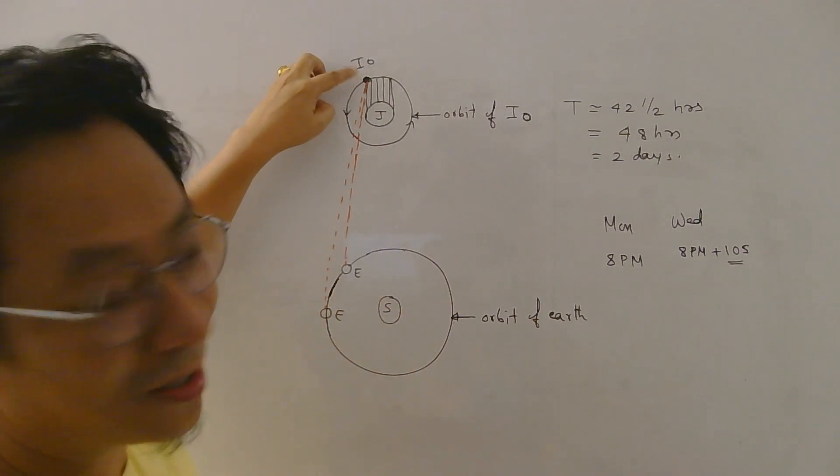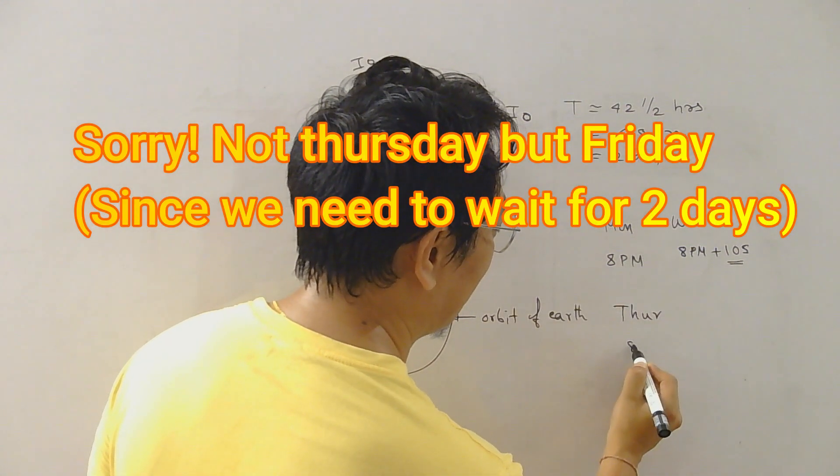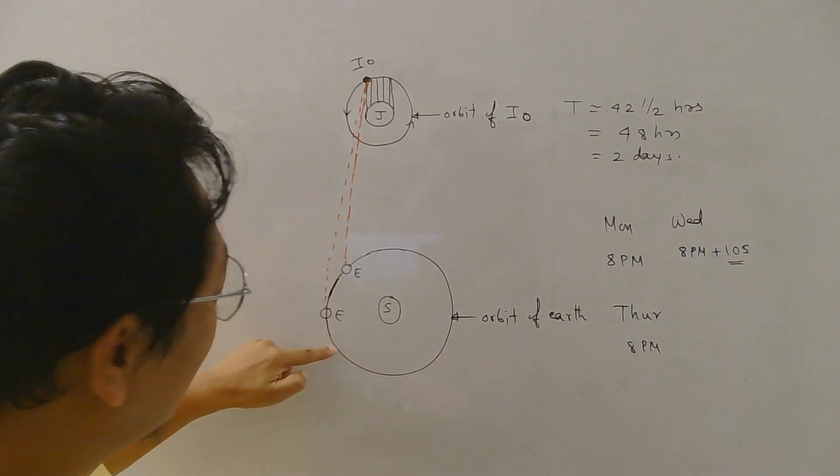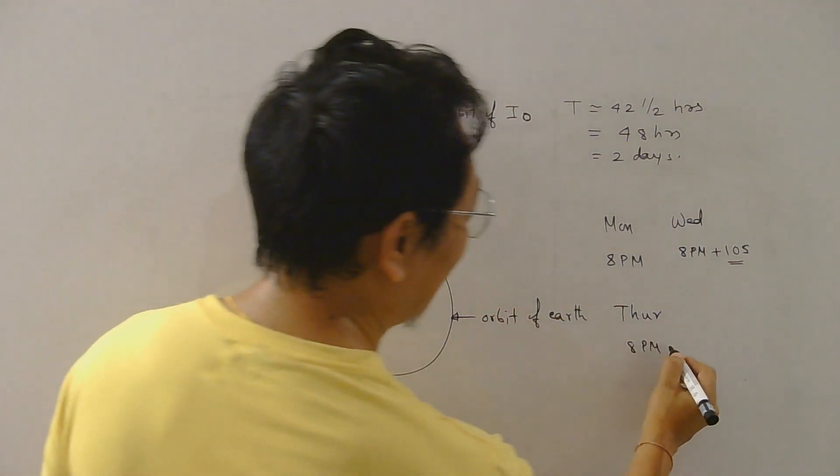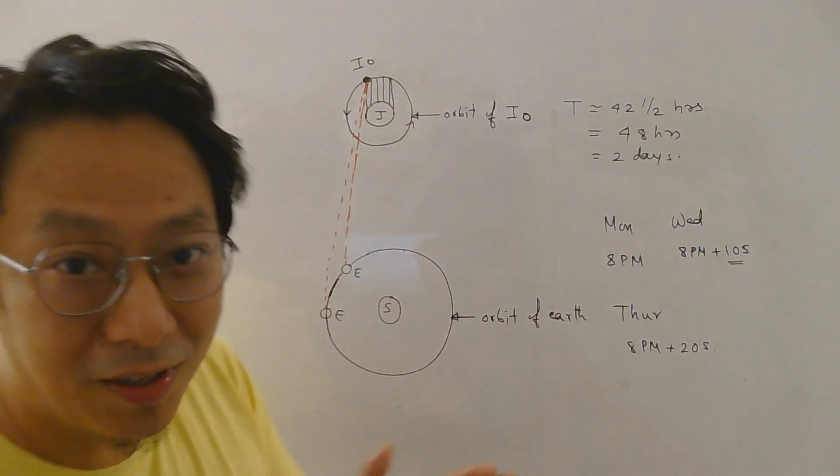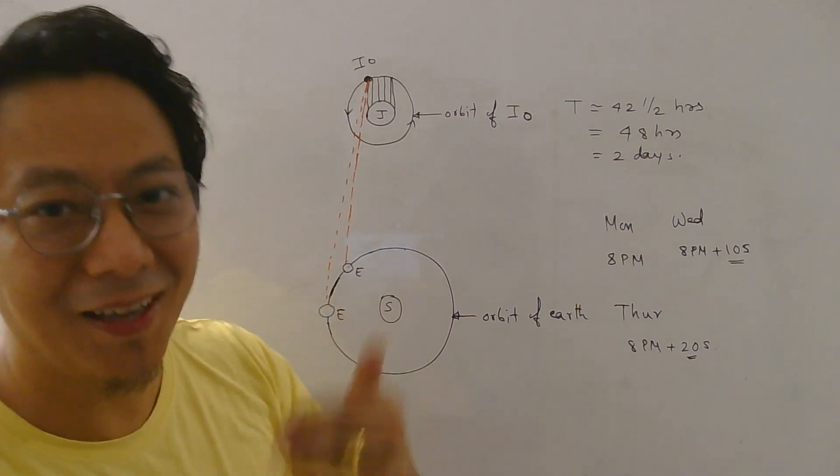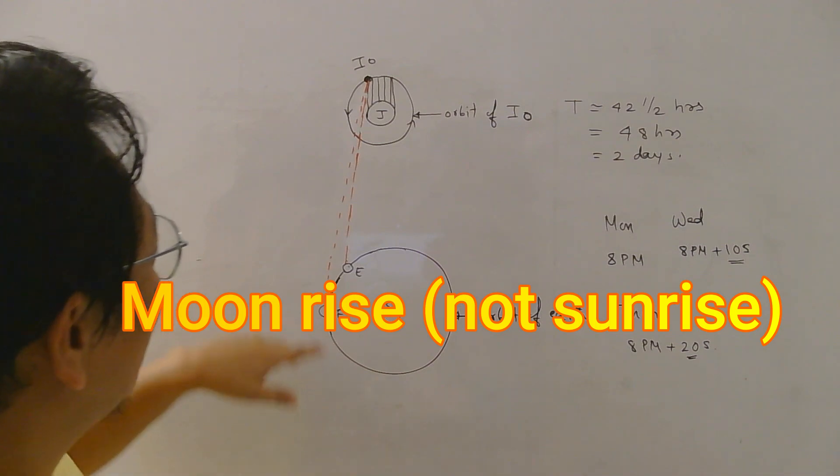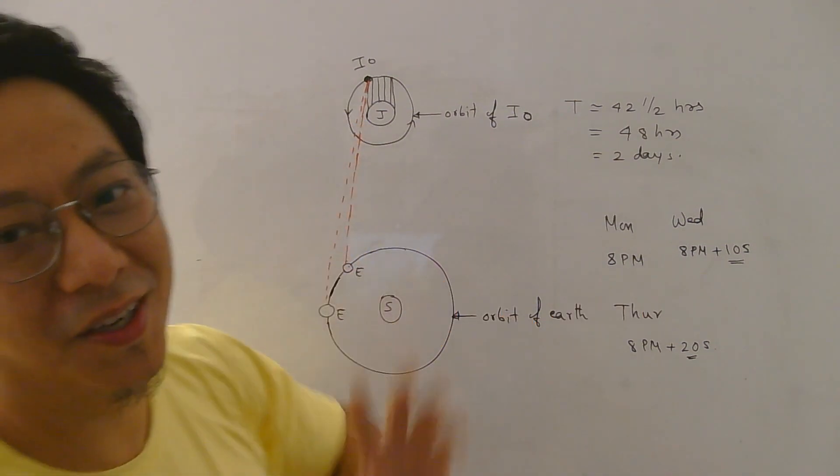Similarly, the third moon rise was expected to be at Thursday 8 PM. If light reaches instantly, now the earth may be somewhere here, but instead it was found to be 8 PM plus 20 seconds. So now the delay became even more. So there was this peculiar delay that was happening for every sunrise which was measured by Romer as earth was going away from Jupiter.